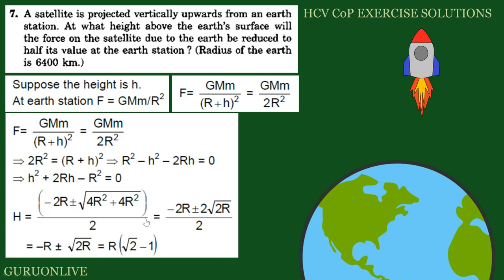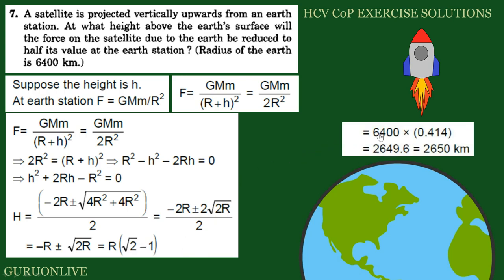H is equal to, after simplification, H is equal to R into root 2 minus 1. So, substituting R, the value is 6400 times 0.414. That is equal to 2650 km.